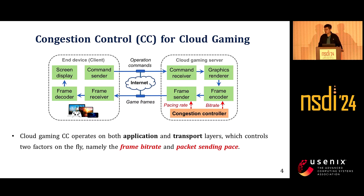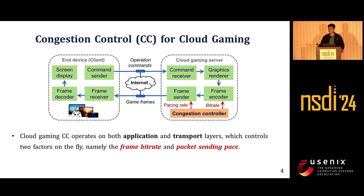Different from conventional CC research, cloud gaming actually operates on both application and transport layers, controlling frame bitrate and the packet sending pace. The frame bitrate determines the frame size or the number of packets within a frame, and the sending pace determines how you push a group of packets into the network — like burst-sending or fully-paced transmission.